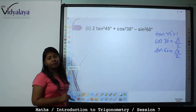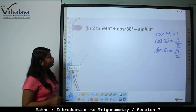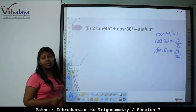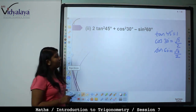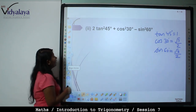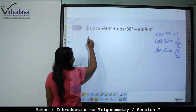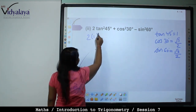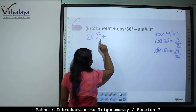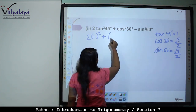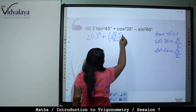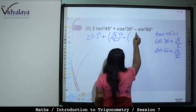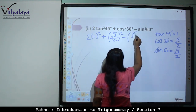Tan 45 value is 1, cos 30 value is root 3 by 2, and sin 60 value is root 3 by 2. So this becomes 2 into 1 square plus cos 30, root 3 by 2, the whole square, minus root 3 by 2 square.